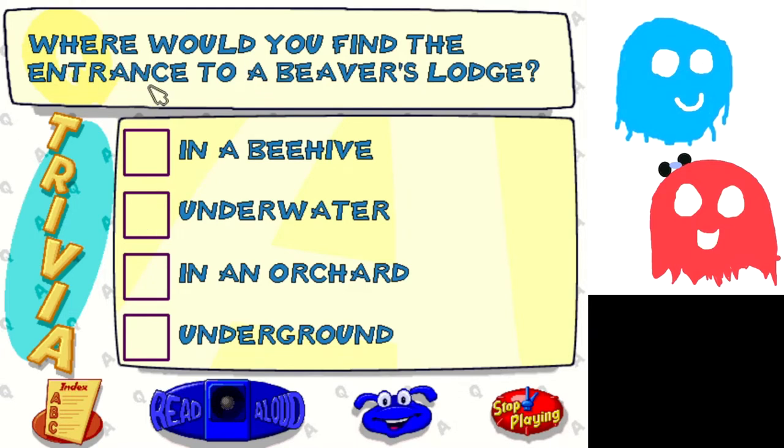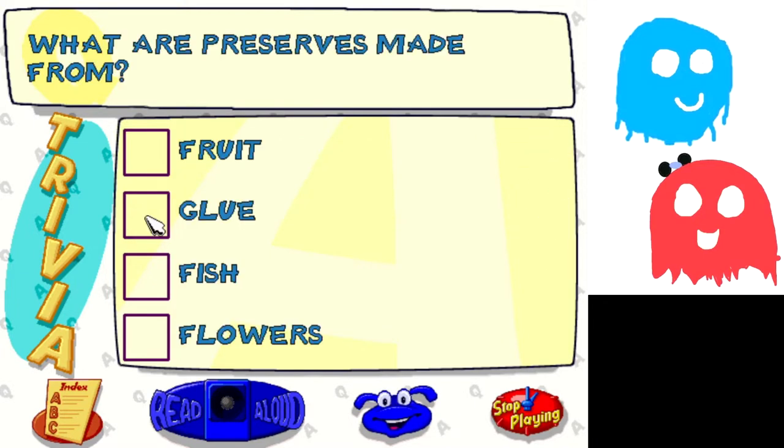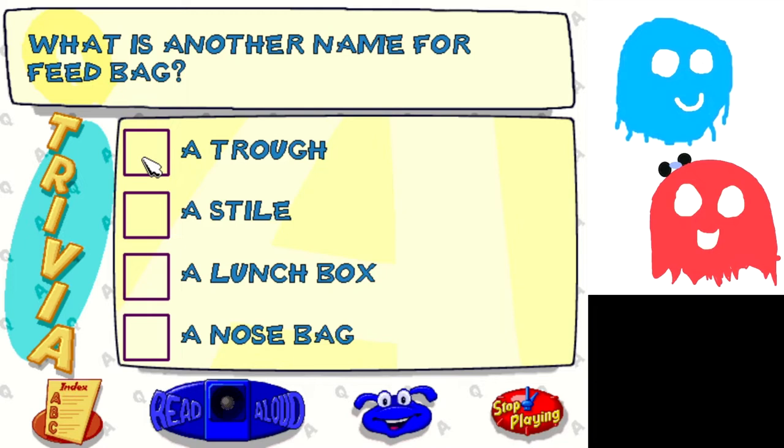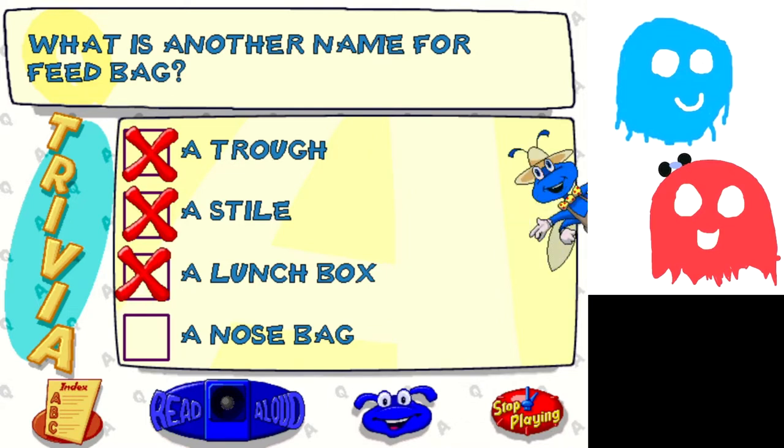Where did you find the entrance to a beaver's lodge? Underwater. Super! I learned that in Banjo-Kazooie. Preserves are made from fruit. Heck yeah! Buzzy's the one who left the tractor running. I'm just charging it up so I can do a wheelie on it later. What's another name for a feed bag? A trowel, I think so. Oh, a stile. Or a lunch bag. A nose bag.